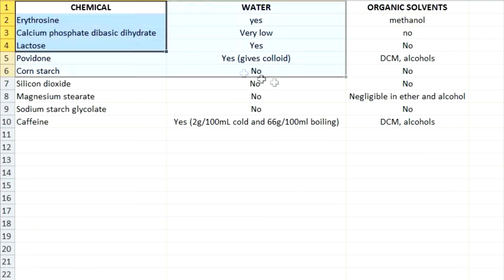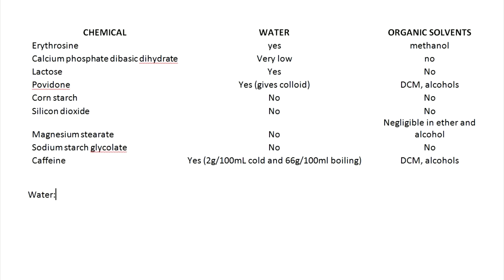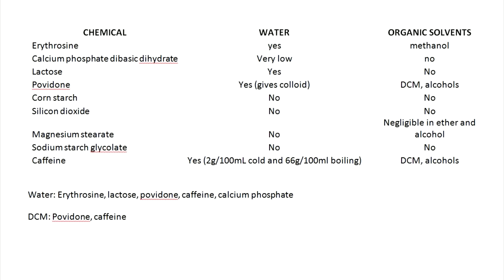Next I highlight the completed table and transfer it to a Word document. Now we're going to design our actual procedure. The two options for a tablet are: do we extract it first with water, or do we extract it first with an organic solvent? For organic solvent we'll be using DCM, and for each one I write down what they will extract from the pill. You see that if we wash it first with water and then extract with DCM, it offers no advantage over just dissolving everything in DCM first. In either case we'll have povidone and caffeine, but starting with water just adds an extra step.